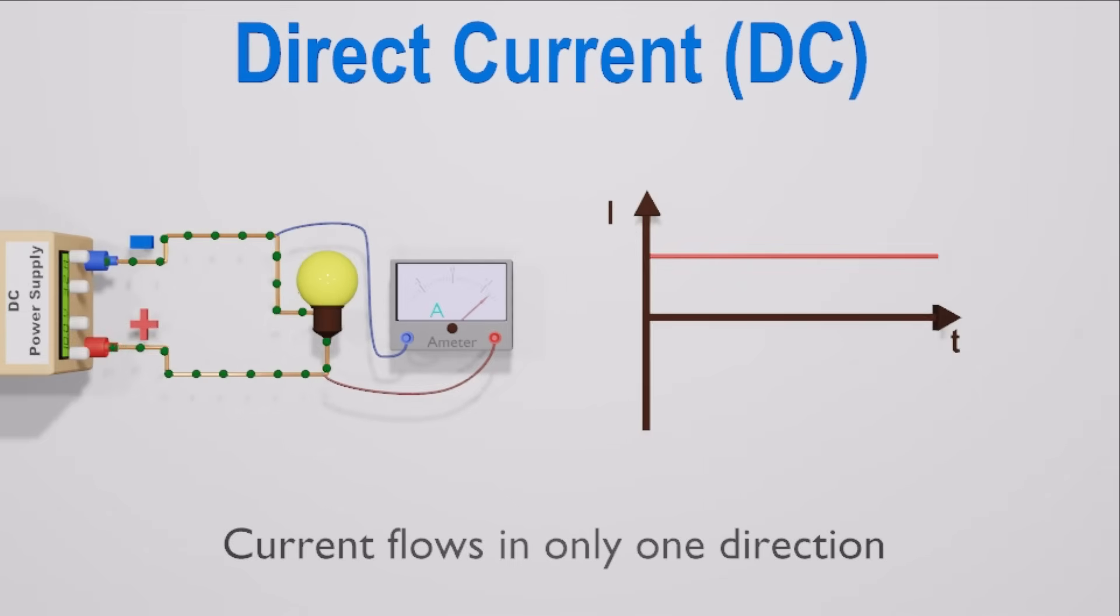We can draw a graph for the magnitude of direct current with the time. Like this. Since the current does not flow in the opposite direction, the graph only has a positive side.